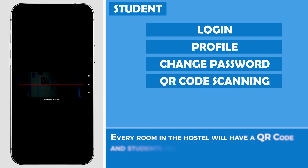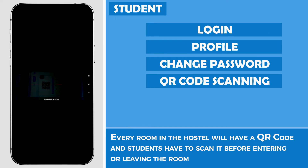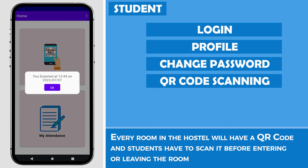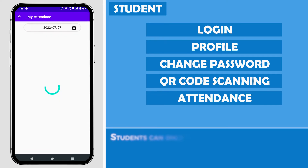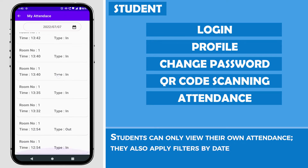Every room in the hostel will have a QR code, and students will have to scan it before entering or leaving the room. Students can only view their own attendance.